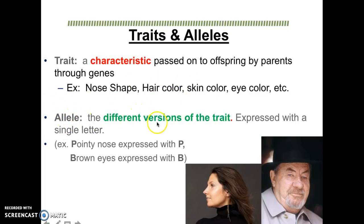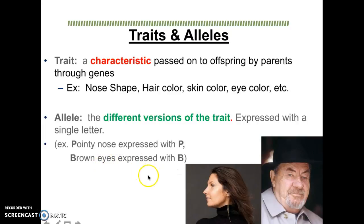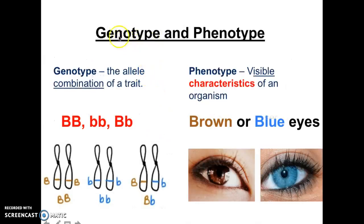For example, for nose shape, if someone had a pointy nose, you could express it with the letter P. If someone had a flat nose, you could express that with lowercase p. For eye color, brown eyes could be expressed with a capital letter B, while blue eyes could be expressed with a lowercase b. Now, genotype refers to the allele combinations of a trait — the actual genes of an organism. So, you could have big B big B, little b little b, or big B little b.